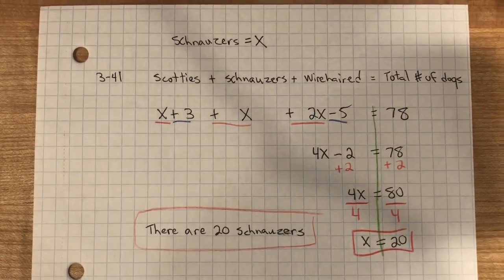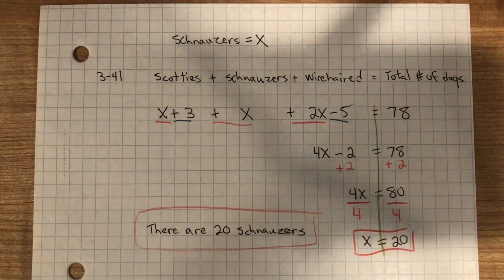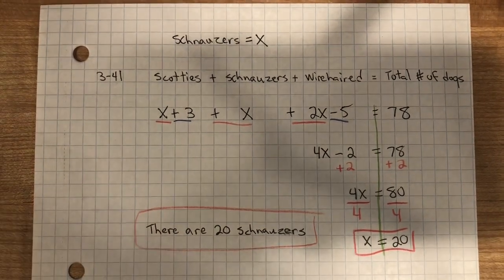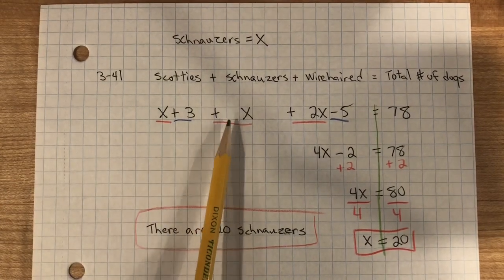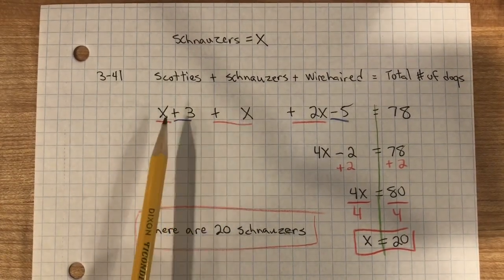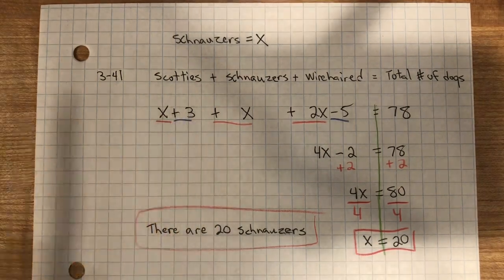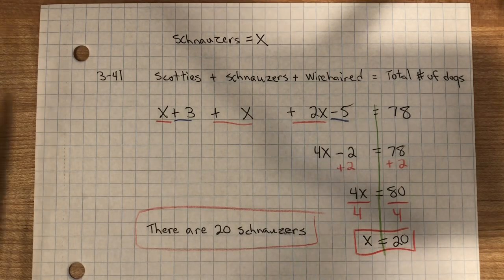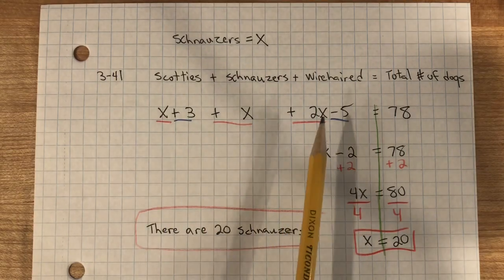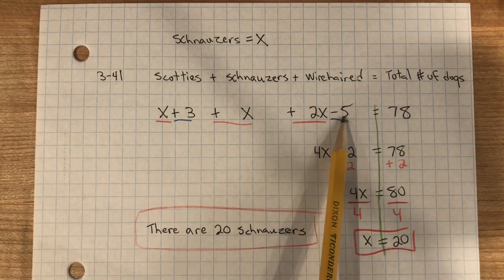For problem 341, at the annual dog show, Chantel noticed that there were three more Scotties than Schnauzers. She also realized that the number of wire-haired Terriers was 5 less than twice the number of Schnauzers. So, here's twice the number of Schnauzers, but it's 5 less.